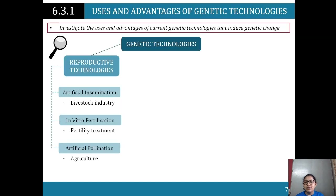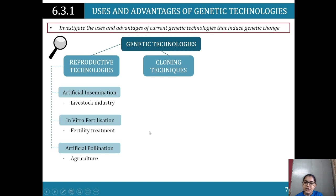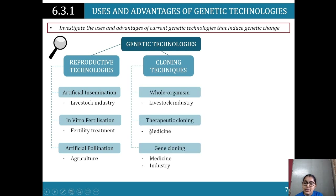Under genetic technology we have reproductive technologies: artificial insemination, in vitro fertilization, and artificial pollination. Cloning technologies include whole organism cloning - that's becoming a thing - and we're obviously looking at genetically modified crops.